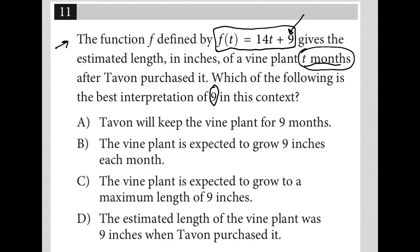Well, we know that t is months. We know, in fact, hopefully you recognize that this is in slope-intercept form. So y = mx + b.